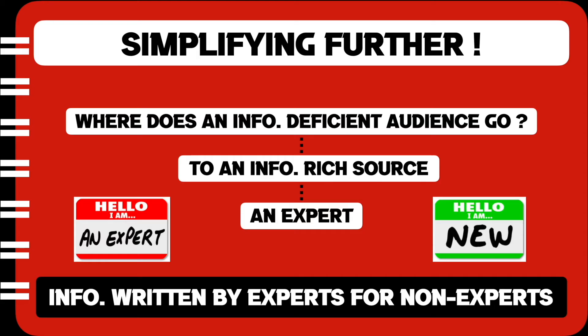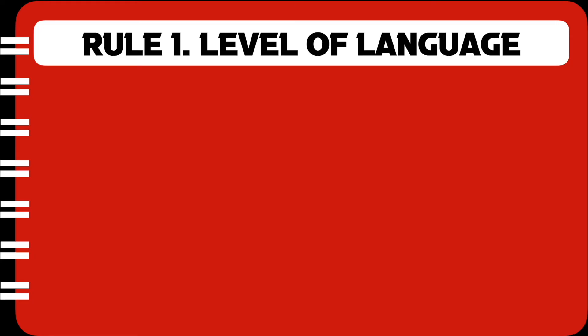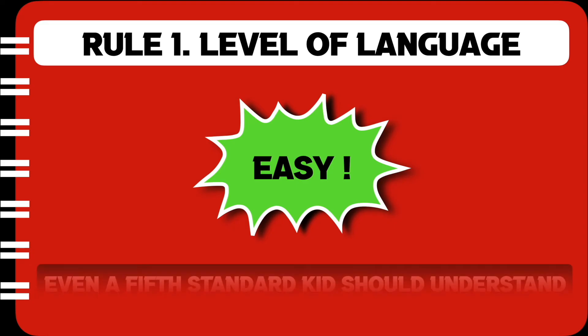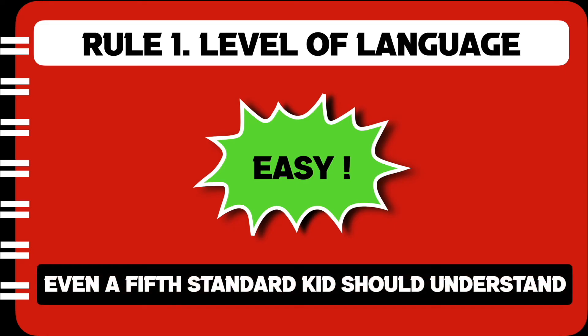So now that we understand the definition of technical writing, I would like to talk about the two golden rules which we should follow when we undertake any kind of technical writing. Now, the first rule is about the level of language and how difficult or easy it should be. The level of language should always be easy, because we need to understand that this information will be read mostly by non-experts. In fact, the level should be so easy that even a fifth-standard kid should understand.